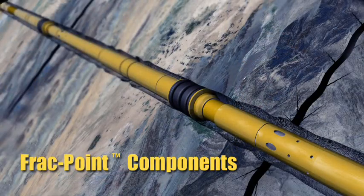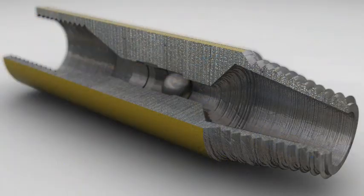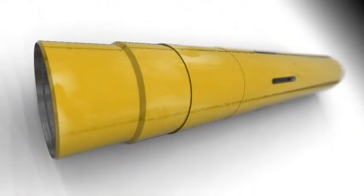The FracPoint completion system consists of five major components. The Ball Seat Sub, the Pressure Activated Frac Sleeve or P-Sleeve,